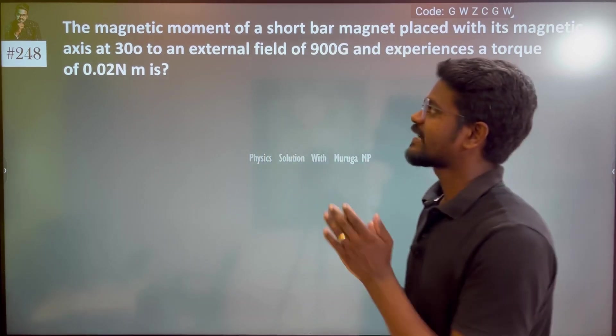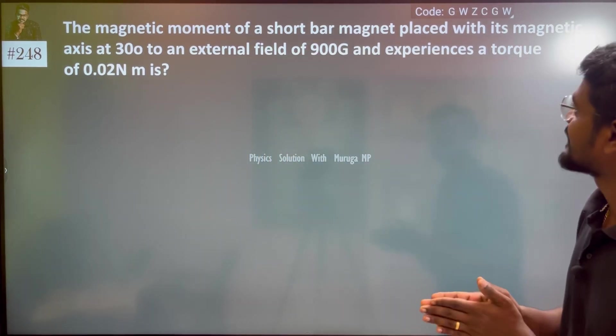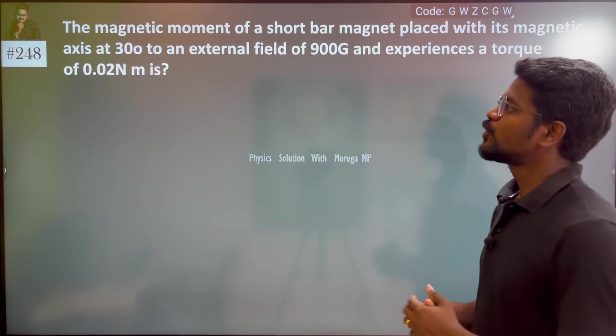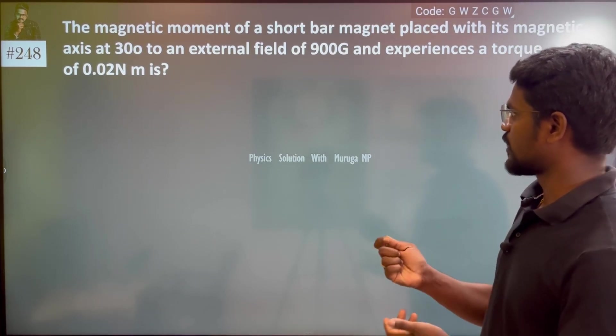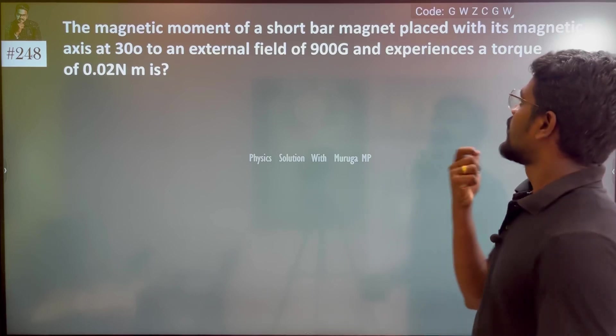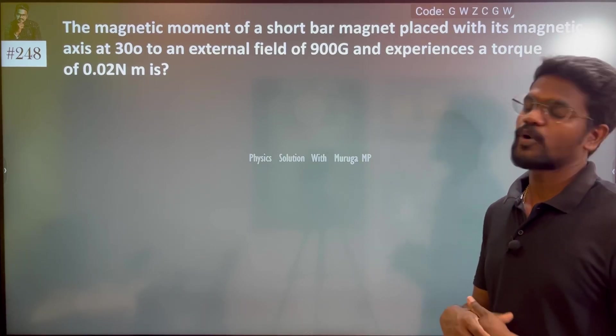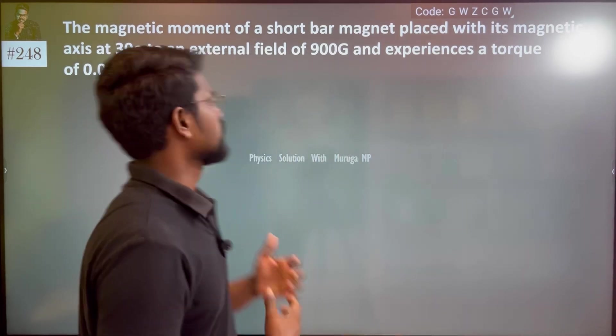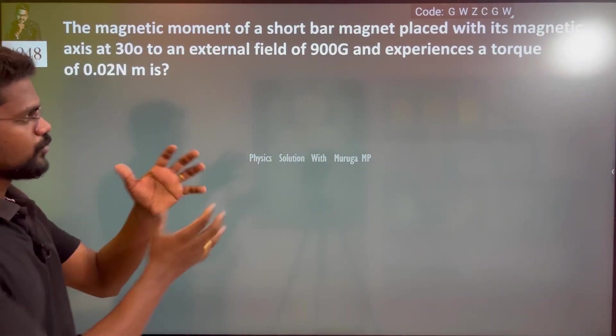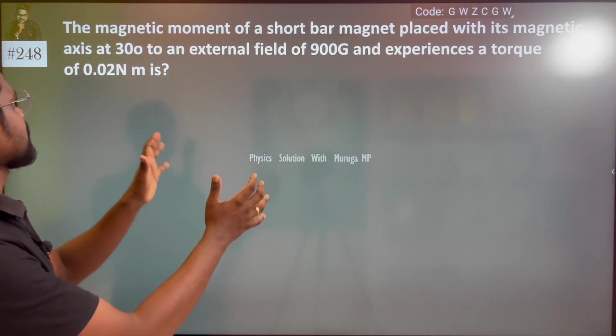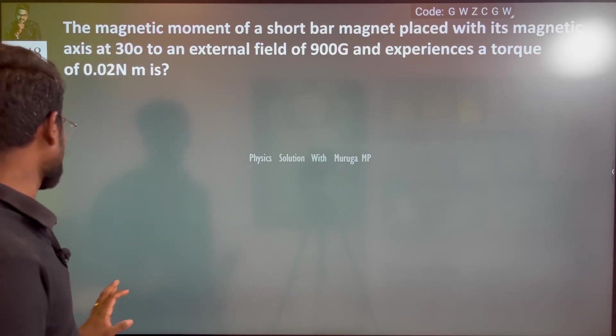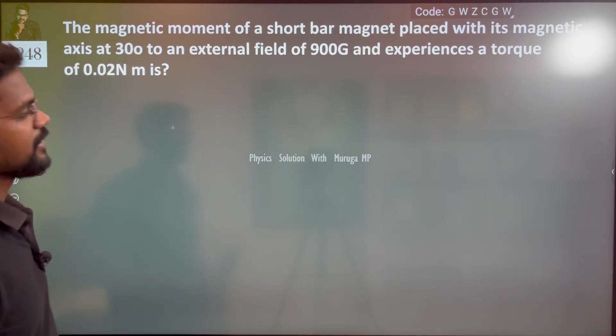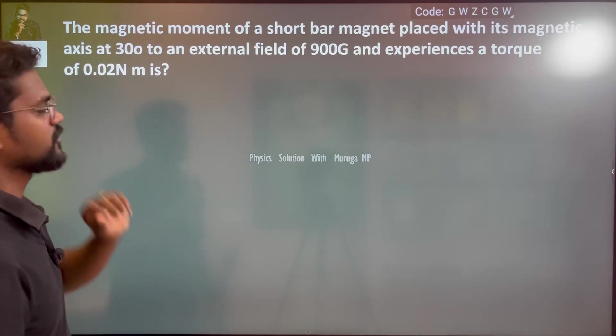The magnetic moment of a short bar magnet placed with its magnetic axis at 30 degrees to an external field of 900 Gauss and experiences a torque of 0.02 Nm. The bar magnet is at 30 degrees in the magnetic field, and we need to find the magnetic moment from the torque experienced.